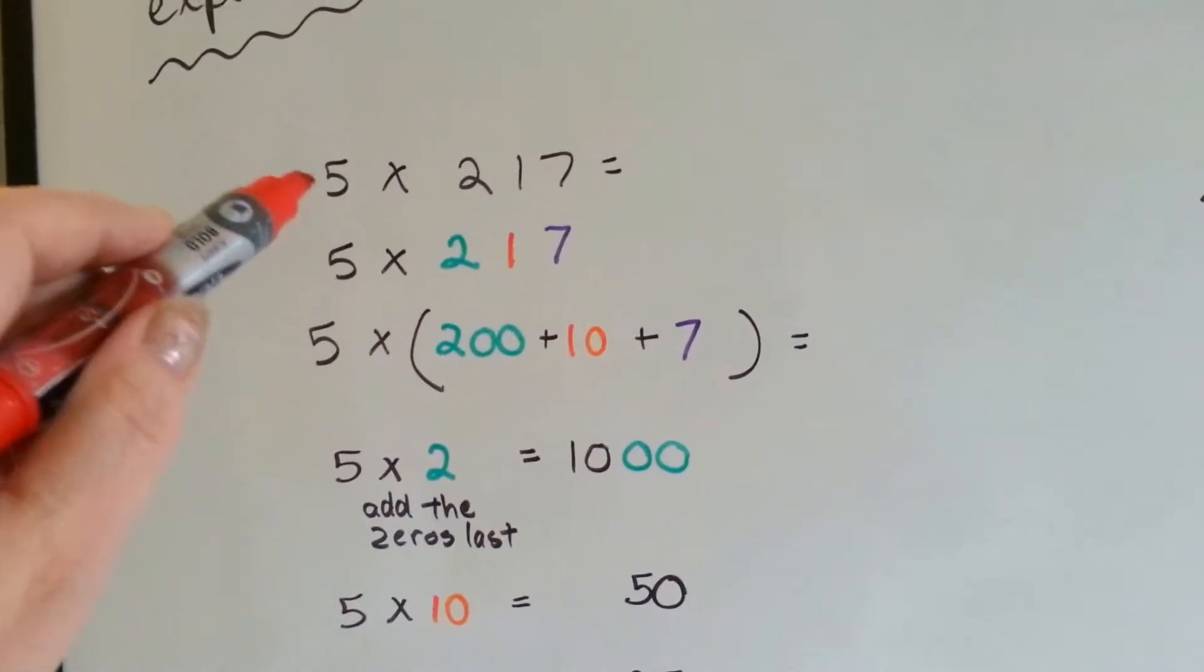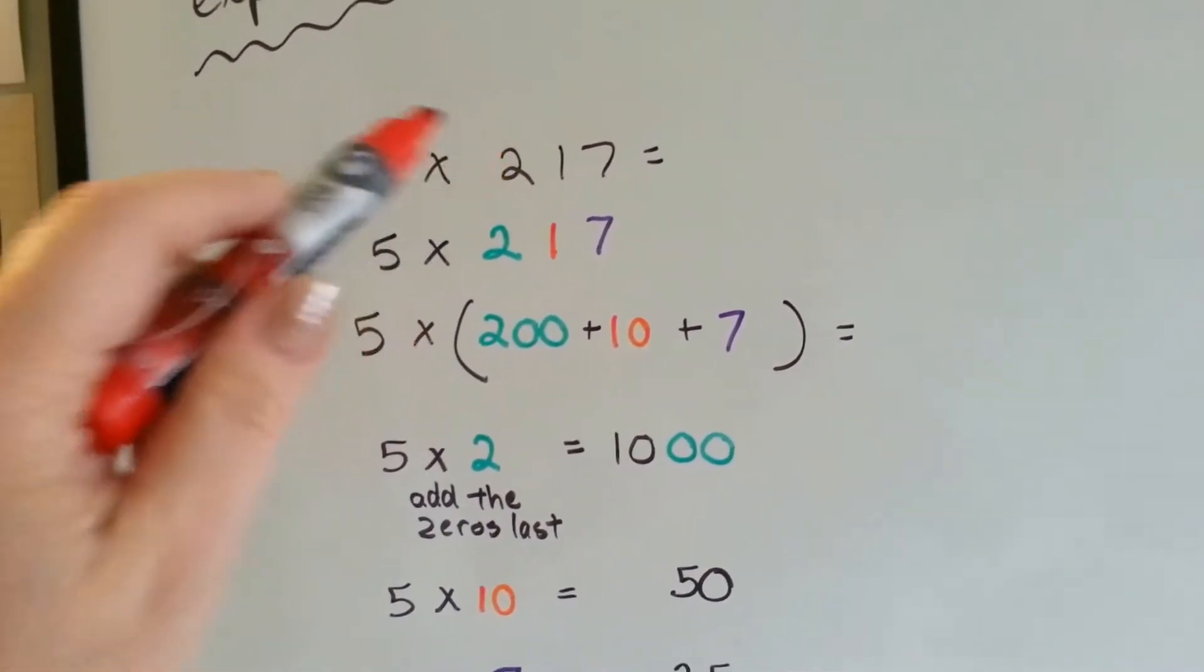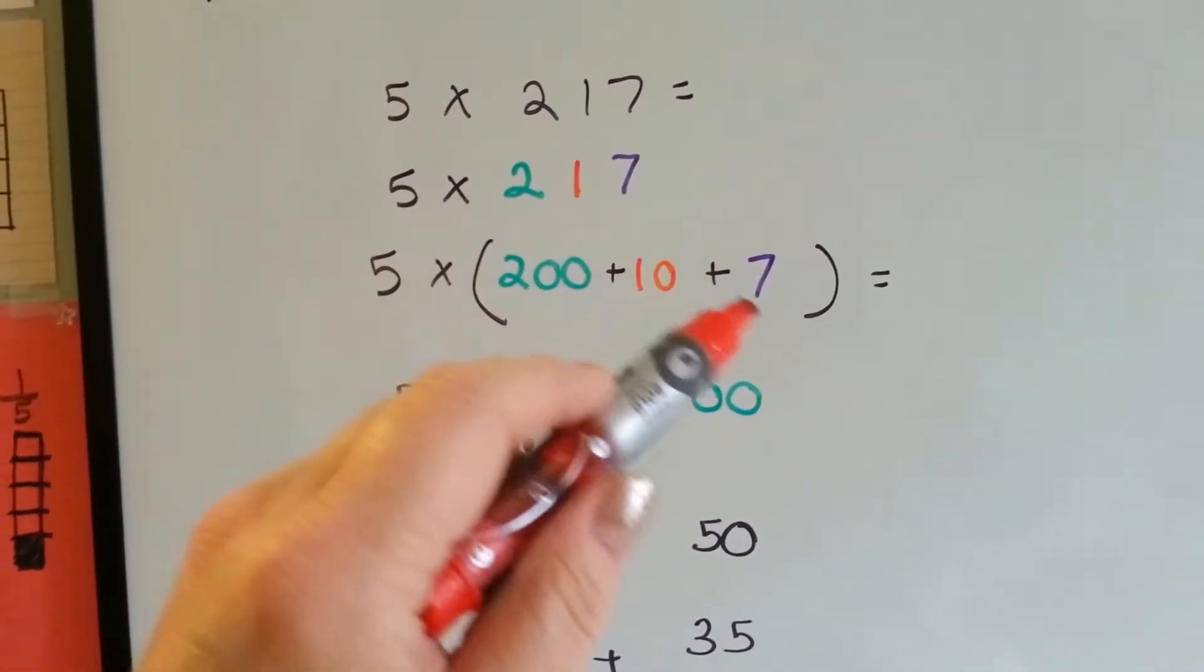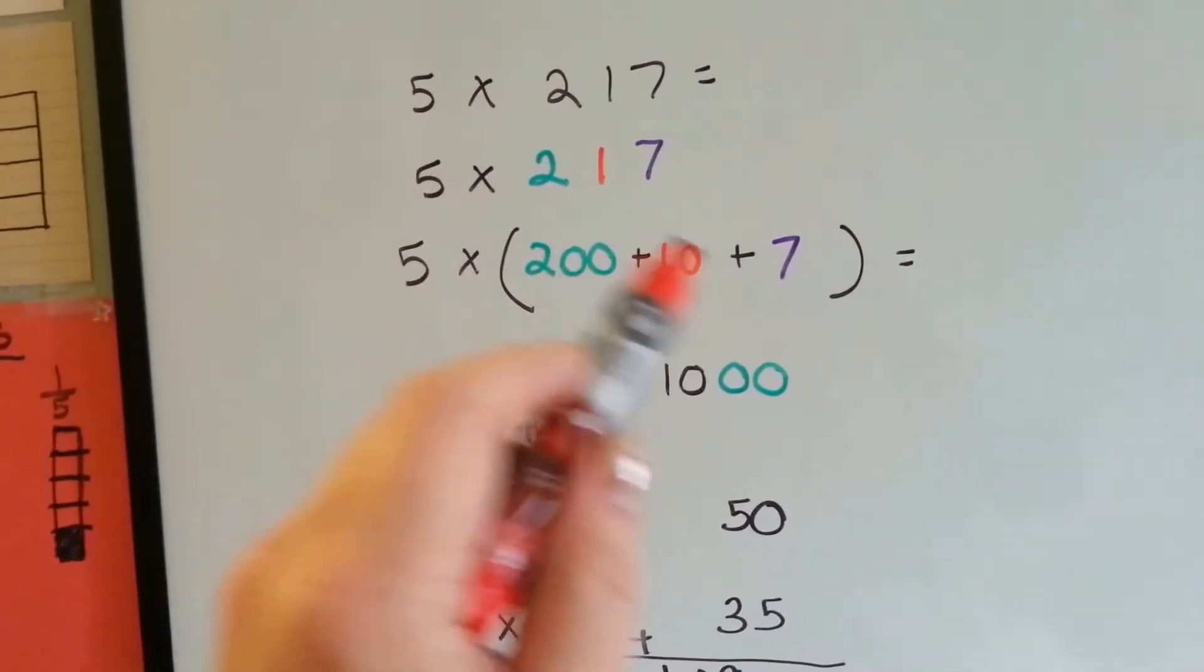So if you have 5 times 217, you can do 5 times 200 plus 10 plus 7, and you can distribute them.